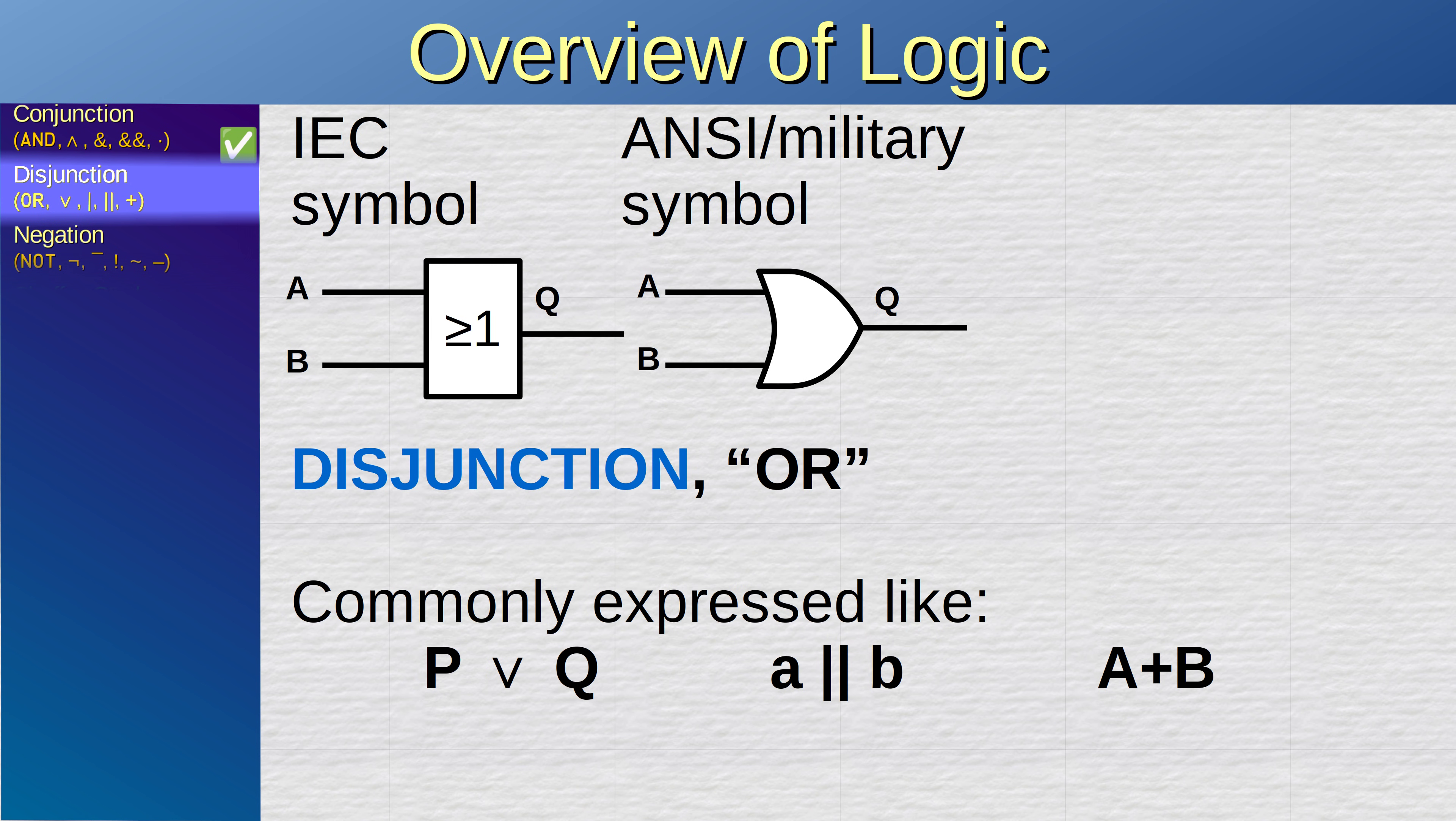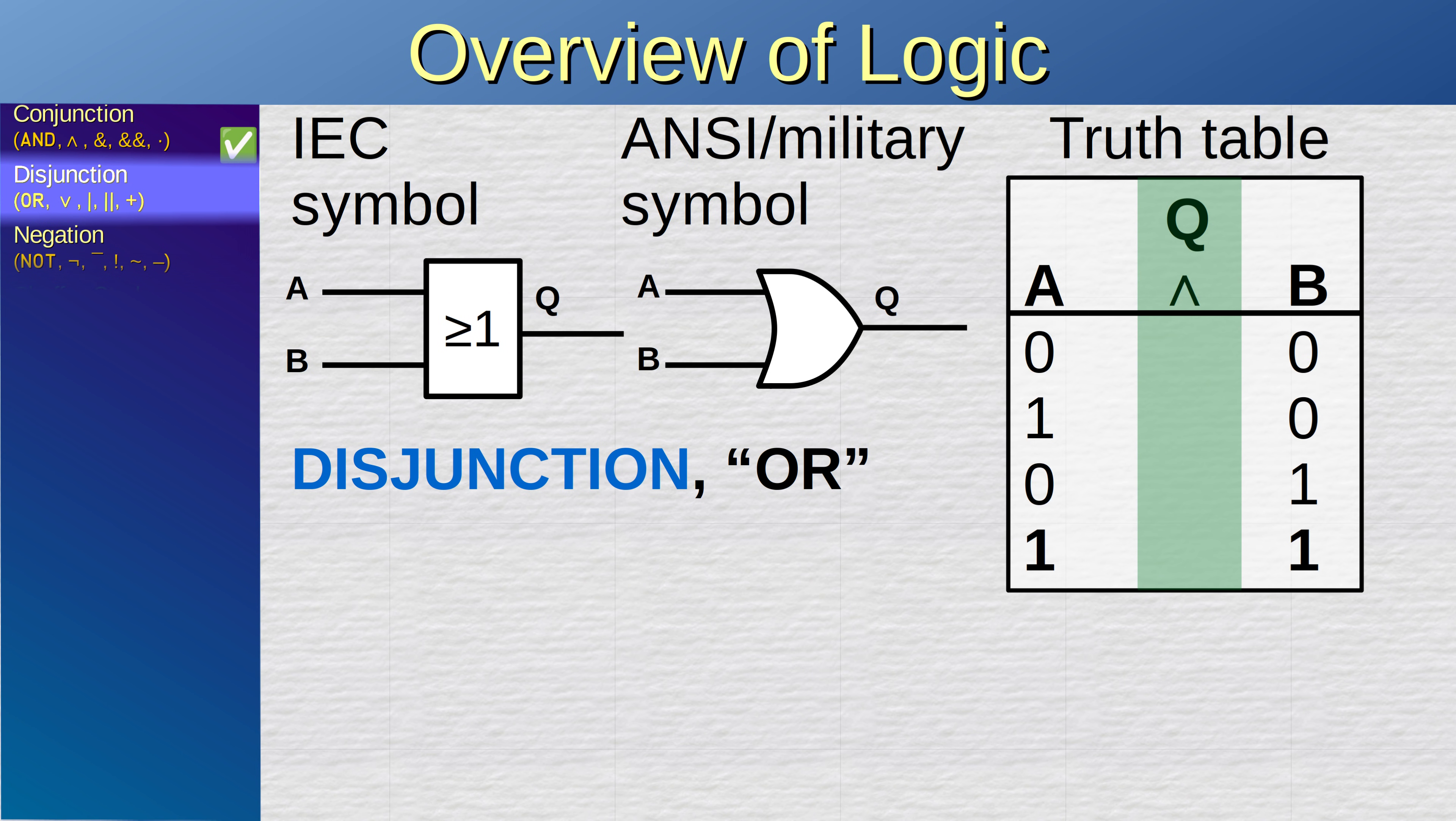In digital electronics we represent it with these symbols. If no power flows in, output Q emits no power. If power flows in from input A, then power flows out from output Q. If power flows in from input B, then power flows out. If power flows in from both A and B, then power flows out. In other words, output is true if any of the inputs is true.